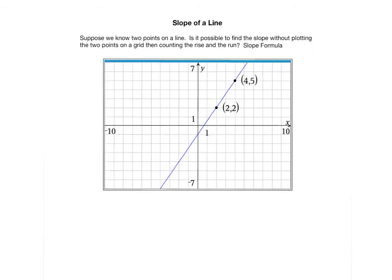But what if we know two points on the line? Is it possible to find the slope without having to graph the line? Well, I've showed you a picture here. Suppose I just gave you the two points, and I said, find the slope of the line between 2, 2 and 4, 5. If you didn't have grid paper, it would be annoying to have to draw the graph, then count the rise over the run between the two points. So we want to come up with a more efficient way of computing the slope algebraically.